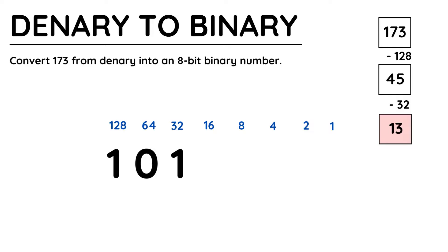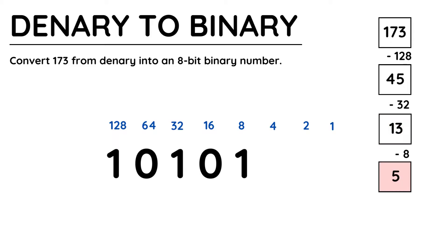Now I look at the next number which is 16. 16 does not fit into 13 so I write a 0 beneath it. The next number to look at is 8, and 8 does fit inside 13, so I write 1 beneath it. Taking 8 away from 13 gives my new number of 5.